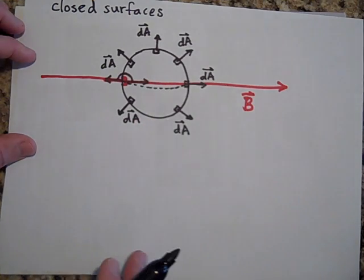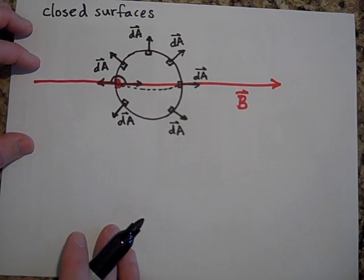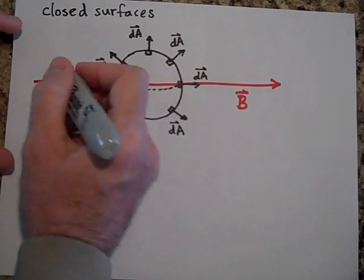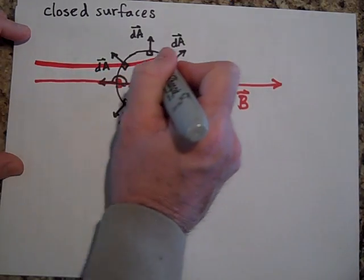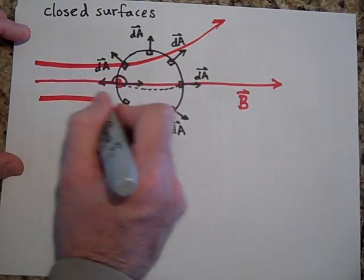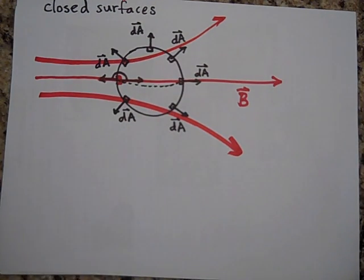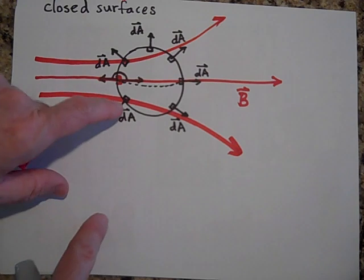But what if it's kind of radiating this way? What if it's going like this when the field's going like that? Well, it turns out that for every arrow that goes in, there'll be an arrow that comes out, and so the total flux through here is still zero.